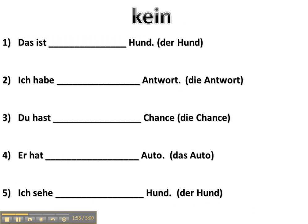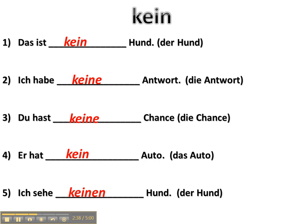Let's do some examples with Kein. Das ist kein Hund — Hund is a masculine noun and this is the nominative case because it's coming after a conjugation of the verb sein, in this case ist. So, Das ist kein Hund. Ich habe keine Antwort — Antwort is the direct object, so accusative, and when we decline Kein to fit that, it's Keine. Du hast keine Chance. Er hat kein Auto. Also, ich sehe keinen Hund.